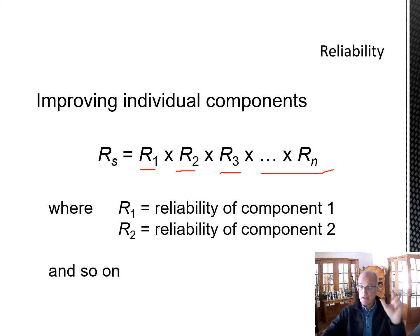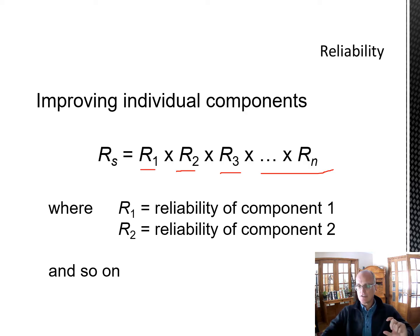Reliability is a probability — it is always a number between 0 and 1. As you multiply numbers between 0 and 1 together, the result becomes a smaller and smaller number. So even if performance is 90%, if we had two elements each at 90%, the reliability of the system would be 0.81, and it goes down further with each additional component.